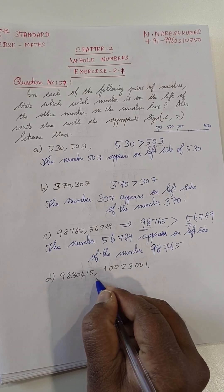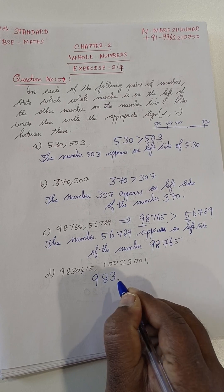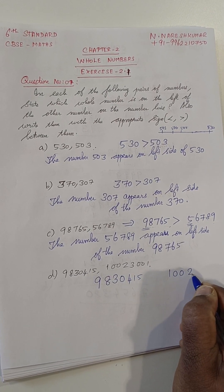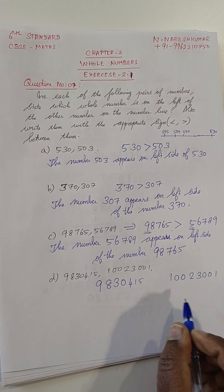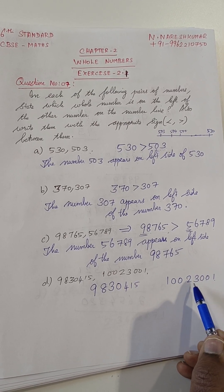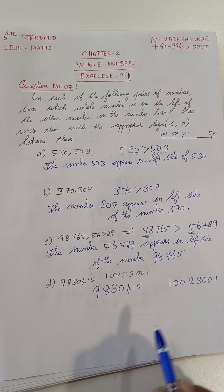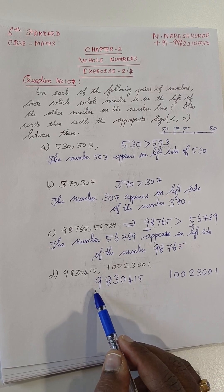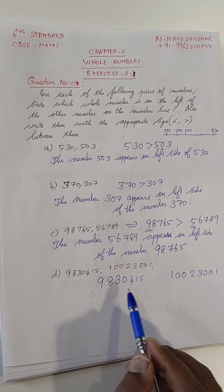The next one, this number 9830415, 10023001. So, here you see, 1, 2, 3, 4, 5, 6, 7, 8 digit numbers are there. Here, 1, 2, 3, 4, 5, 6, 7 digit numbers are there. So, this is a 7 digit number and this is an 8 digit number.